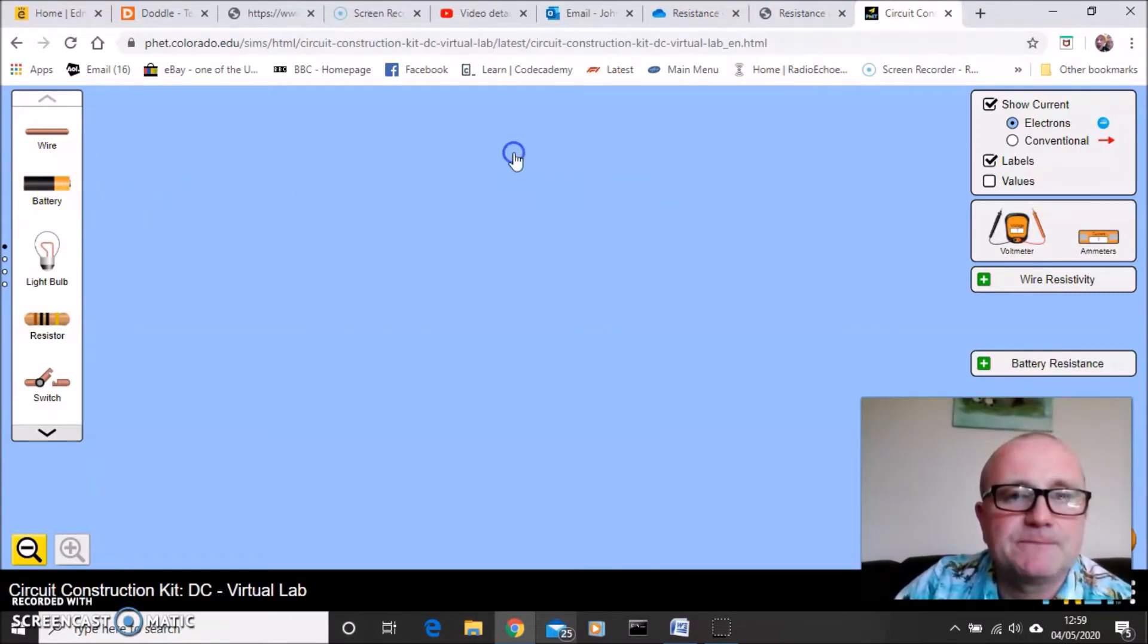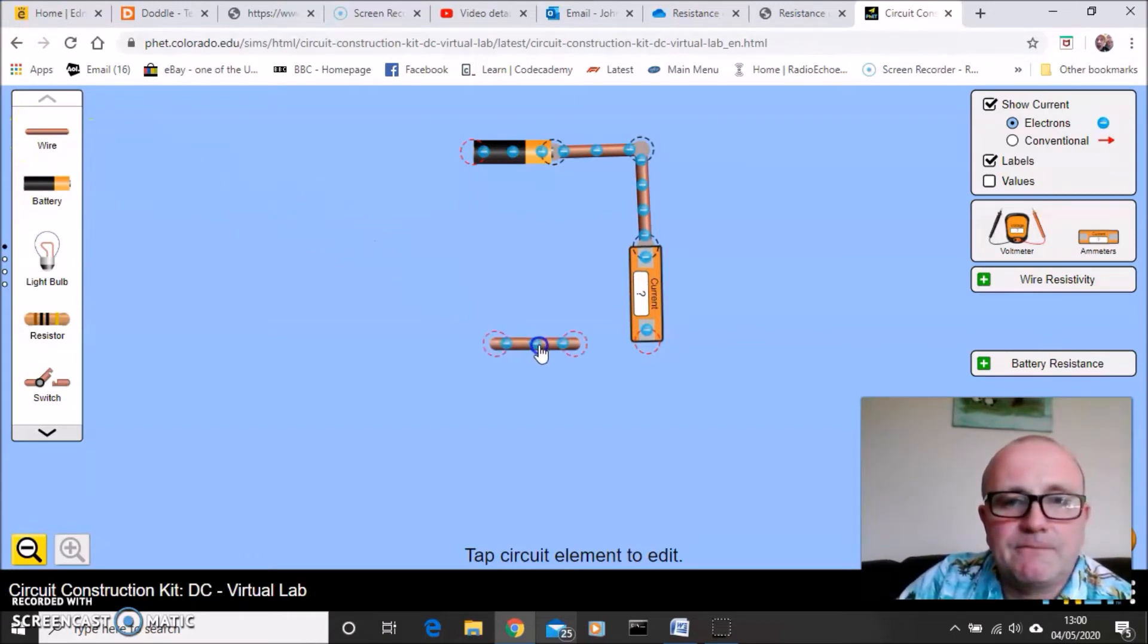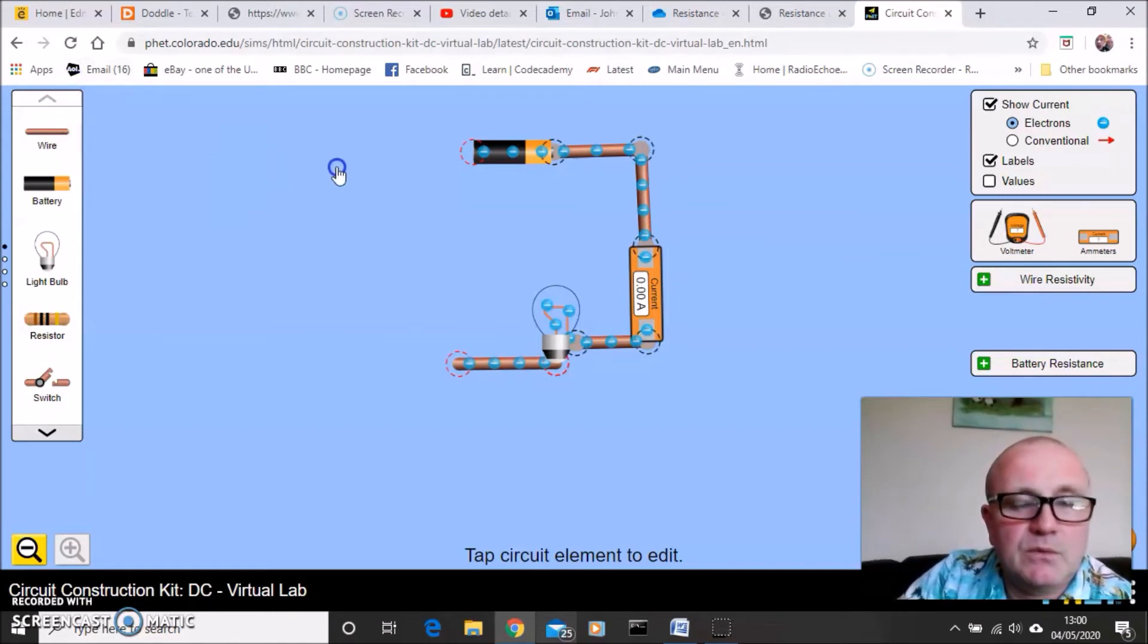So here's my one cell, add some wire, keeping it as nice and neat and tidy as possible. Let's get my ammeter, add some wire, pop that into the circuit. Let's add my wire here, add some more wire, and let's have a bulb, add some more wire.